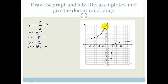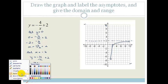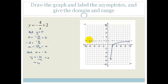In grade 11, one thing you need to always try to do is pick a point and substitute it in. Let x = −2: y = −4/(−2) + 2 = 2 + 2 = 4. So the graph goes through the point (−2, 4). The asymptotes are y = 2 and x = 0.